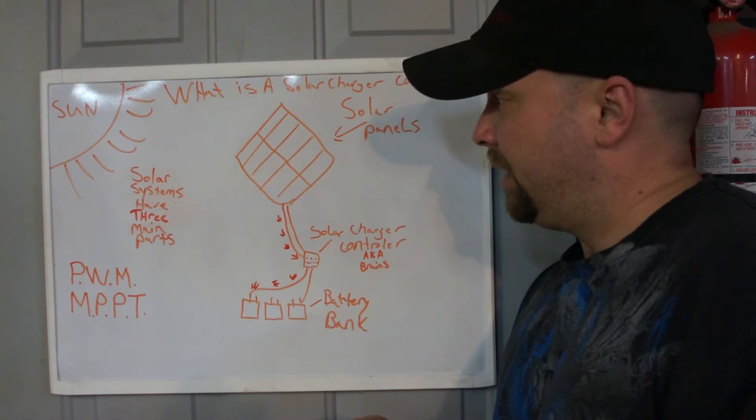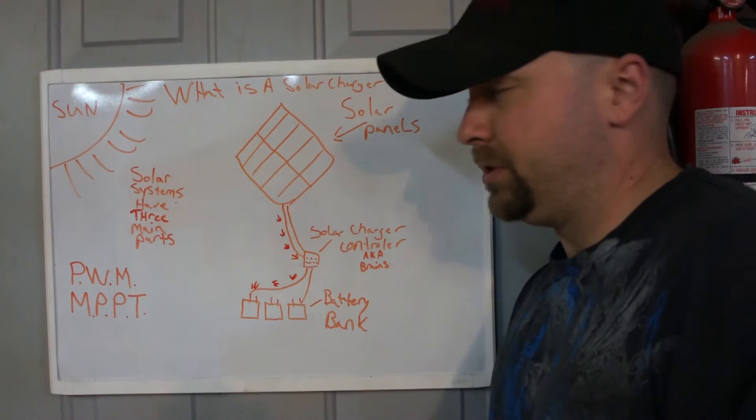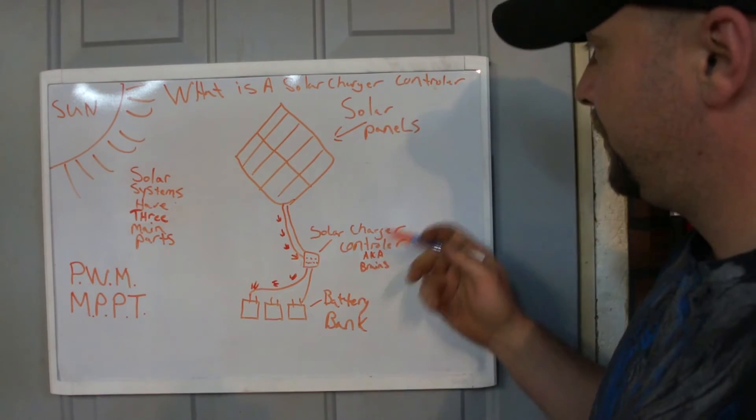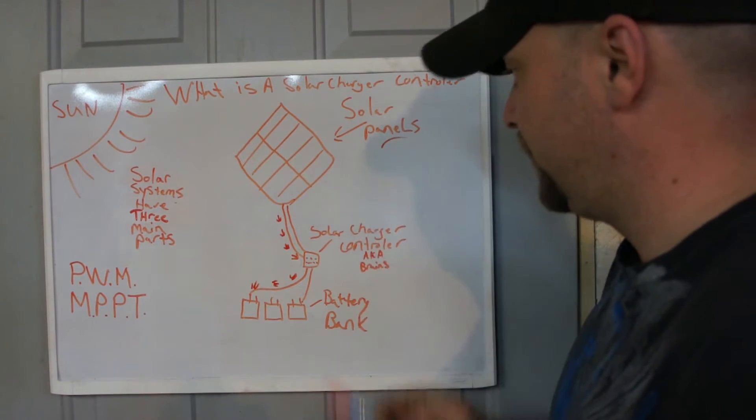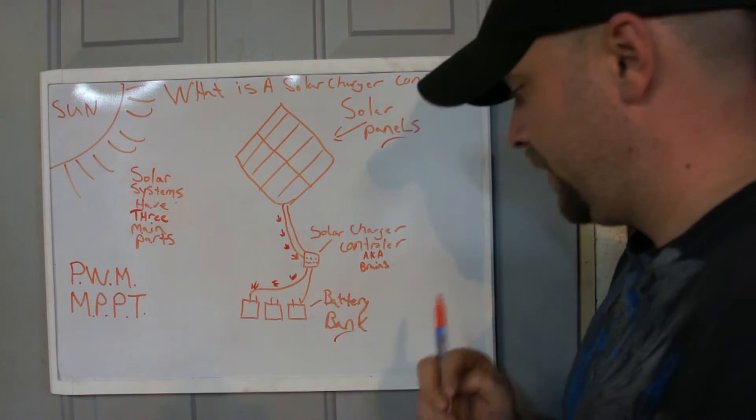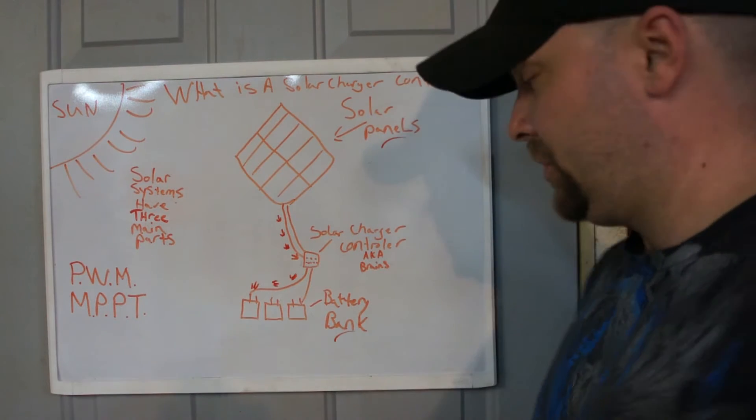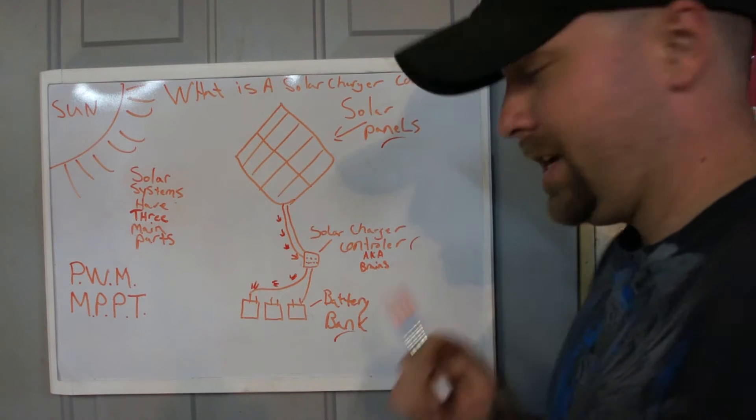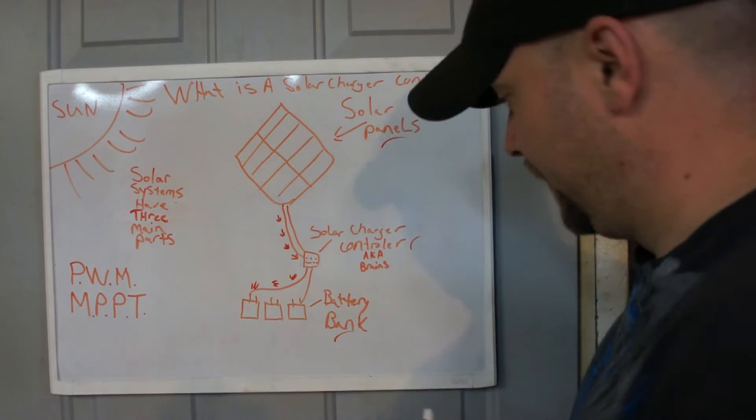Well, first thing we need to establish here is our basic solar system. The solar system consists of your solar panels, your battery bank for storage, and the solar charger controller itself - aka the brains, we're going to call it here.